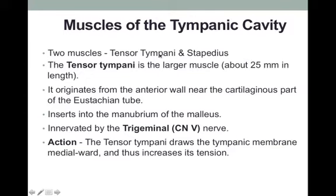There are two muscles within the tympanic cavity: the tensor tympani and the stapedius. The tensor tympani is the larger of the two, still only about 2.5 cm in length. It originates from the interior wall of the middle ear cavity, just above the Eustachian tube, and attaches to the manubrium of the malleus. The tensor tympani is innervated by the trigeminal nerve, the fifth cranial nerve.